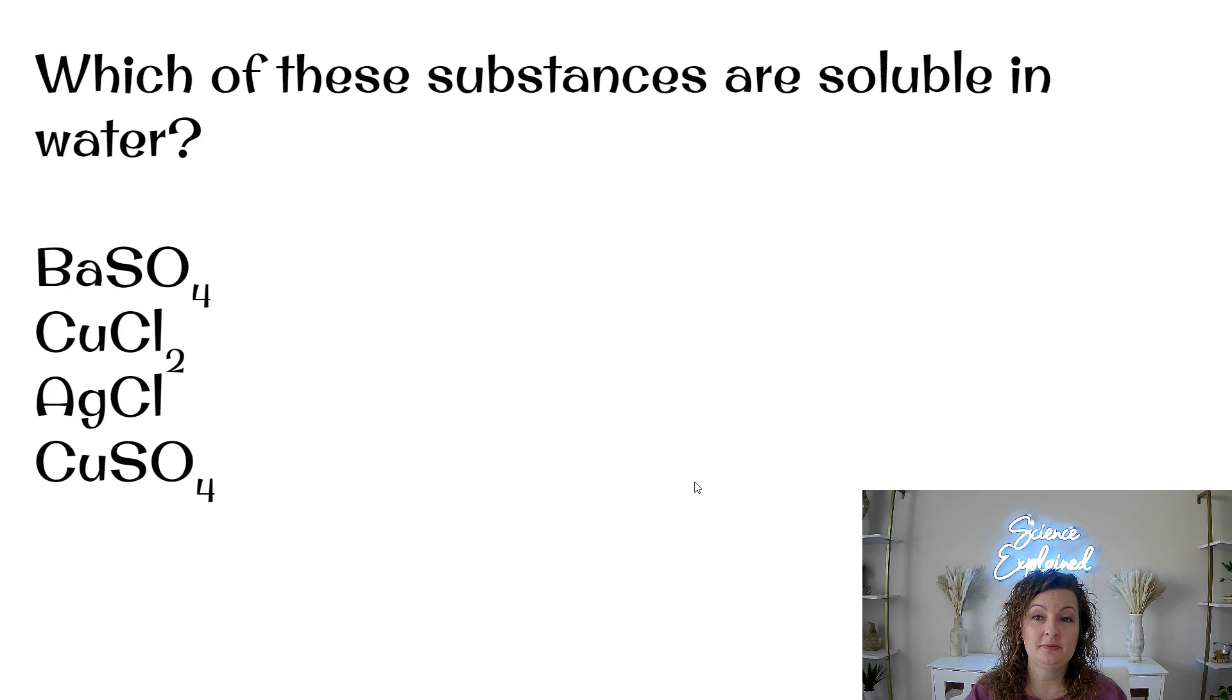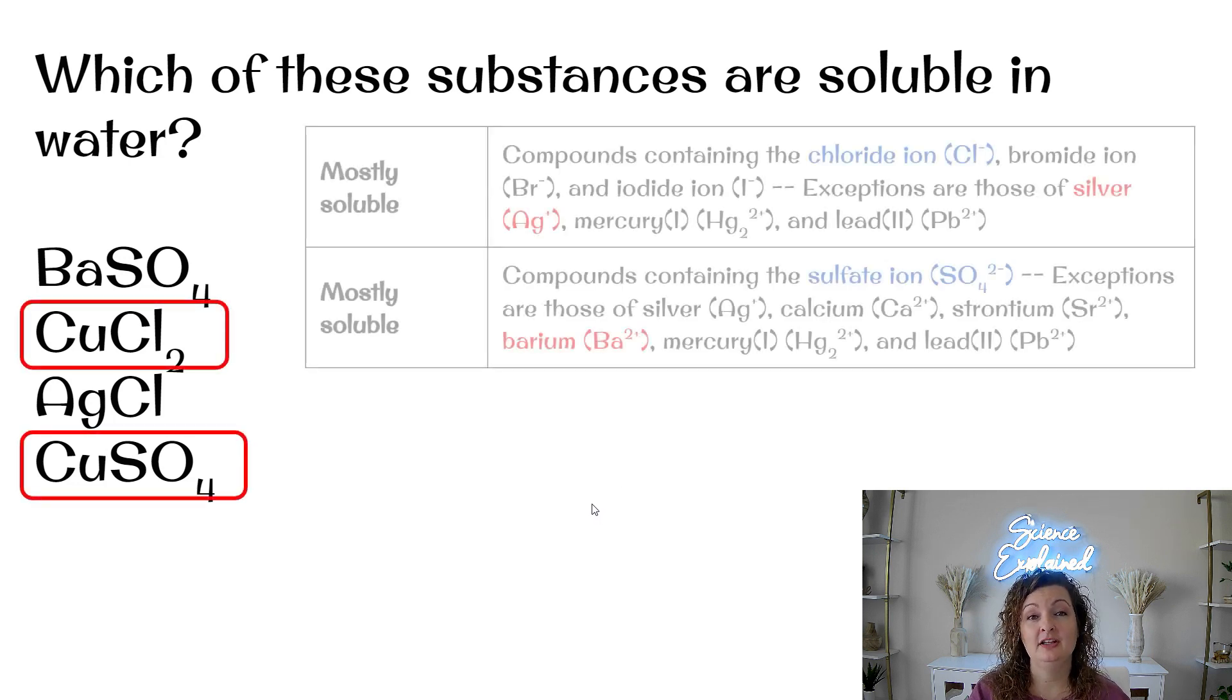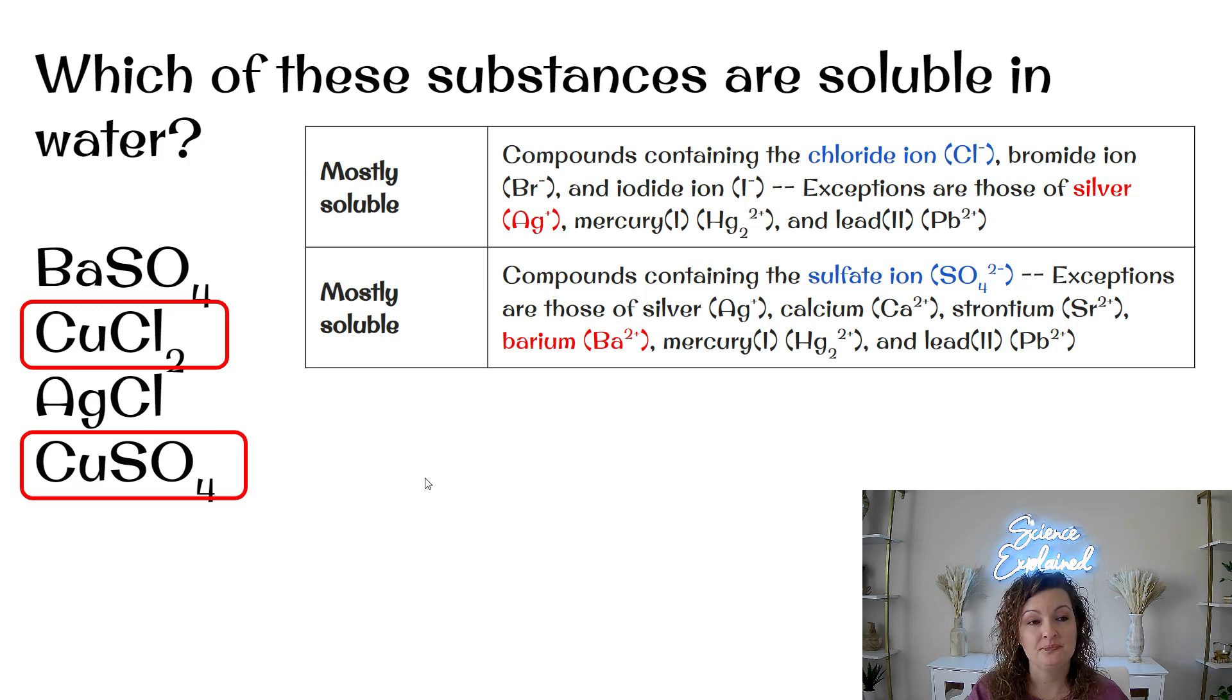Okay. Let's go ahead and try another one. Which of these substances are soluble in water? Pause your video. Look at your rules. See if you can figure this out and we'll go over it together. All right, let's go ahead and go over it. I'm going to circle the ones that are soluble and let's look at the rules to figure out why. So the first one is BaSO4. You can see that our sulfate ions are mostly soluble, but there are exceptions. One exception is barium, which means this one will not be soluble, be insoluble.